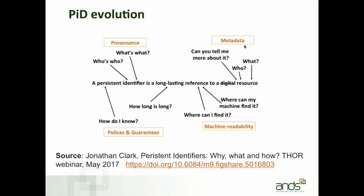PIDs have evolved quite a lot over the last 20 or so years. This slide is taken from Jonathan Clark's presentation at the THOR webinar last week. He notes that now we have identifiers for people as well. We want to know what persistence means and how long a PID will last. Metadata has grown, so there is a lot more value in retrieving the metadata as much as retrieving the object itself. That object may no longer be digital, because you can refer to digital information on a physical object, which is a big growth area we're exploring in the IGSN webinar. And last but not least, we want our machines to be able to interpret PIDs.